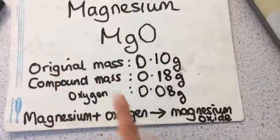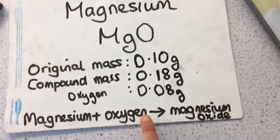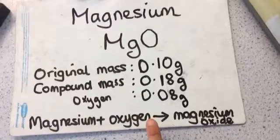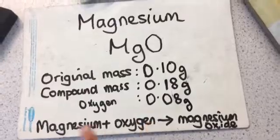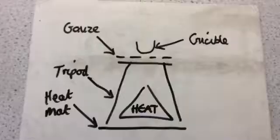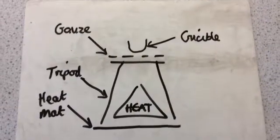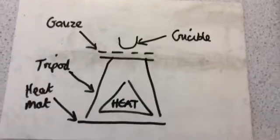And then when we take the mass of the compound, we can measure the mass of the oxygen. So it appears like there's a mass increase, but of course we know that we cannot change the mass. Here's a quick drawing of the diagram for this experiment.